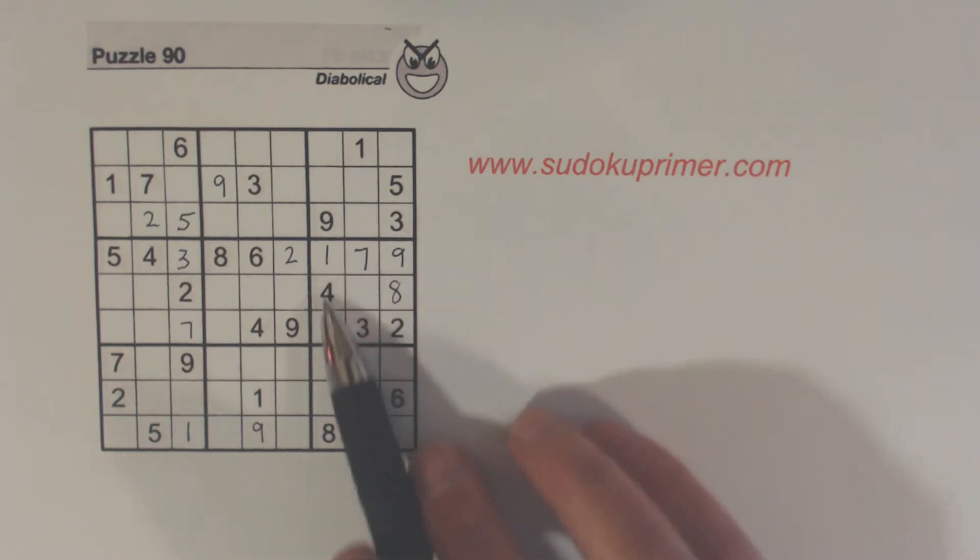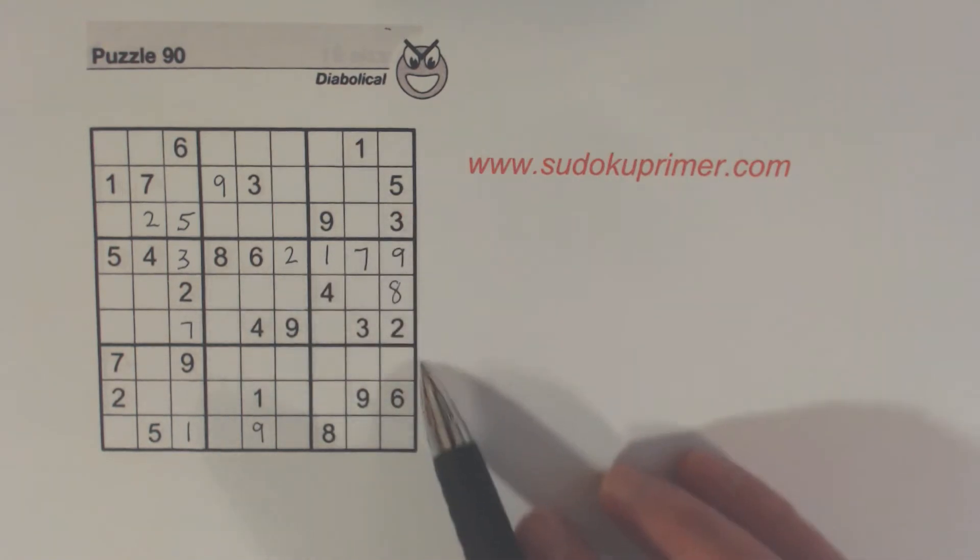I got that 8 because we're only missing 5, 6, and 8 in this box, and there's a 5 and a 6 in this column already. So that's how I got that 8.